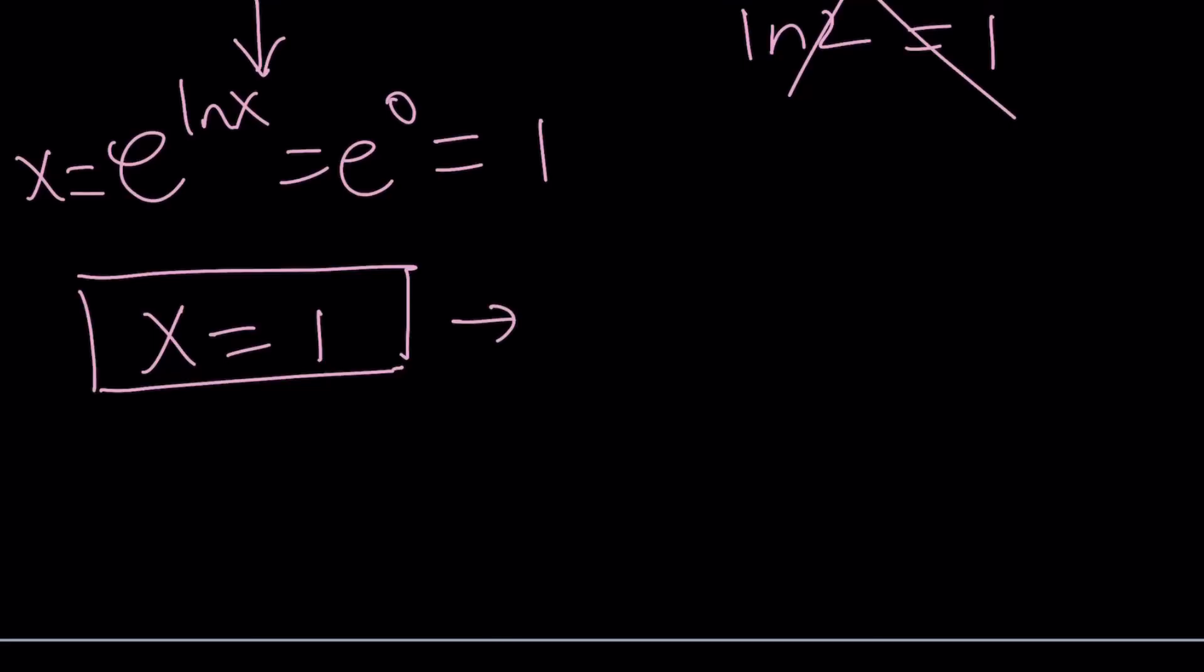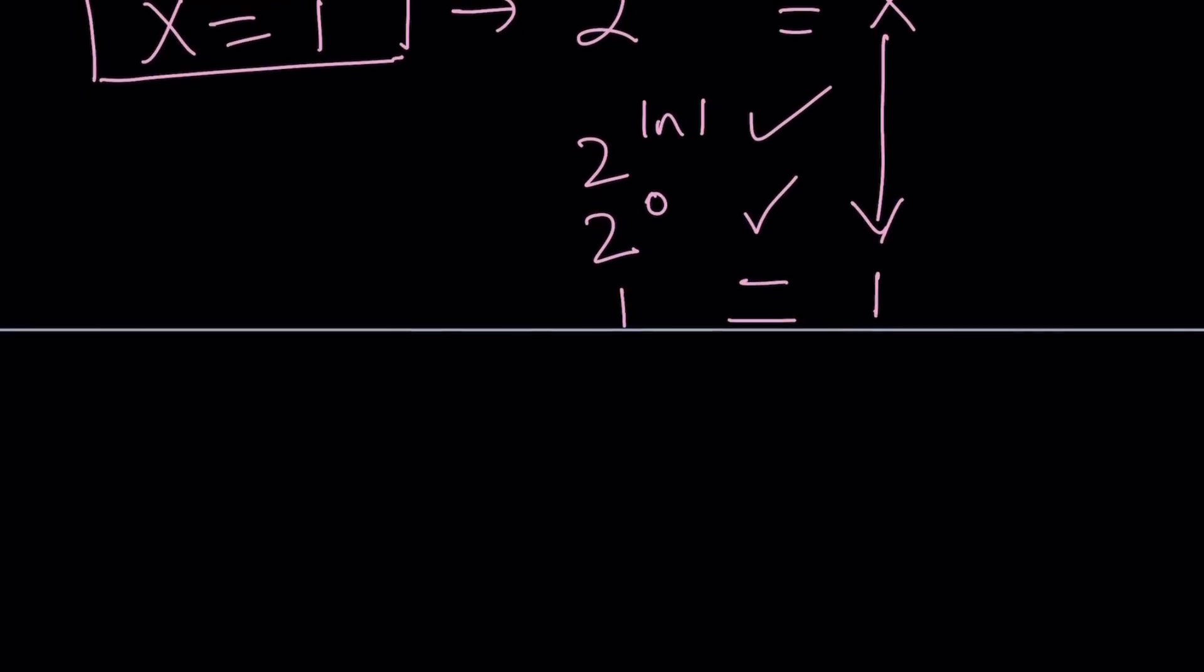Let's go ahead and check our work. The original problem. And we always have to use the original equation if we're checking our work, not the modified version. So we have 2 to the power of ln x equals x. If x is equal to 1, we get 2 to the power of ln 1, which is 2 to the power of 0, which is 1. And if x is 1, then you get 1. So they are equal. So we're good. So x equals 1 seems to be the only real solution. And it works.